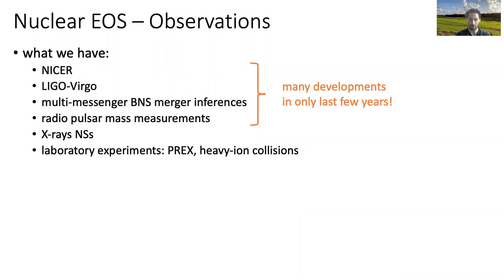All of the multi-messenger work — basically using gravitational waves in combination with electromagnetic signatures to probe the EOS — we haven't heard too much about. If we're able to use the radio afterglow light curve to distinguish between equations of state, that would be amazing. And then also the traditional field of pulsar mass measurements.